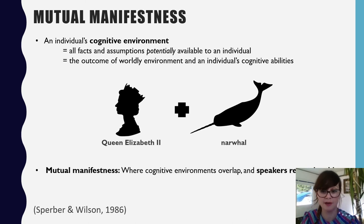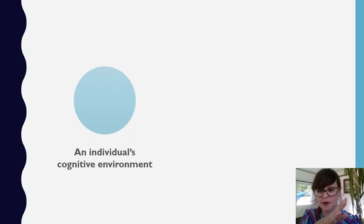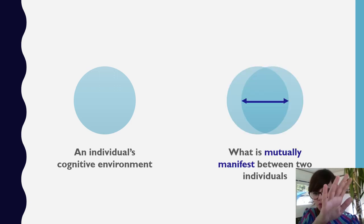So mutual manifestness is where cognitive environments overlap, and crucially where speakers recognize this—where speakers are aware of this. So if something is to be mutually manifest, it needs to exist in two individuals' cognitive environments, and both individuals be aware that it's a shared representation. So I've tried to create a visual depiction of mutual manifestness. It's very basic. This is one individual's cognitive environment, a circle, and here two cognitive environments overlapping partially. And what's shared, what's in the middle, is what's mutually manifest. Of course, these two circles will move further apart and closer together depending on a huge amount of factors and also depending on context. The same two individuals might have different things mutually manifest at different times, but this is just to give a kind of something to compare to.